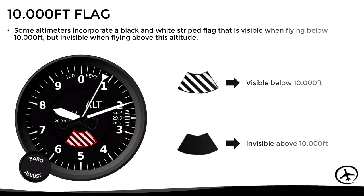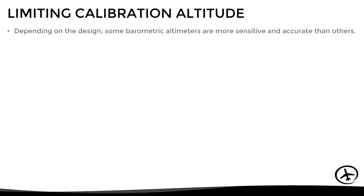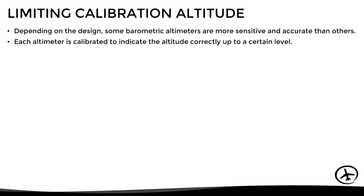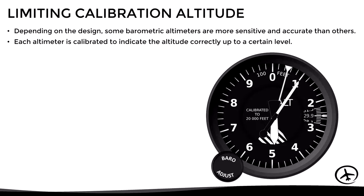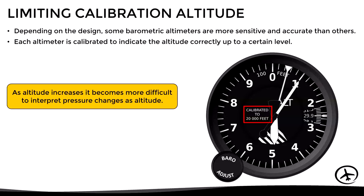Each altimeter has a maximum calibration altitude, since some barometric altimeters are more sensitive and accurate than others. Each altimeter is certified to measure altitude correctly up to a certain level — for example, up to 20,000 feet. Above this level the reading may have significant errors, because as pressure reduces with altitude it becomes more difficult for the altimeter to sense changes in pressure accurately.